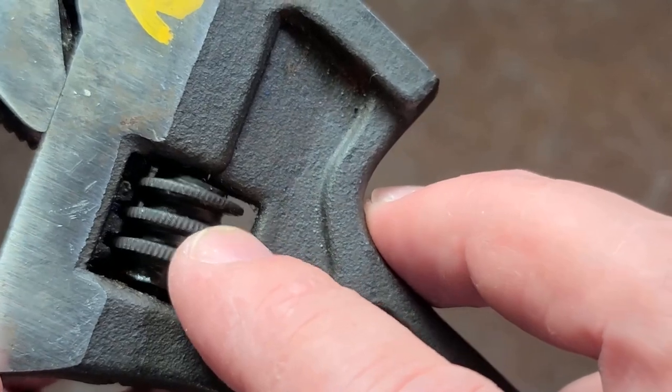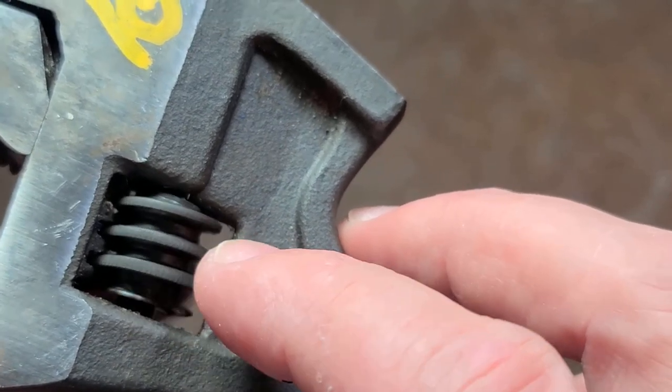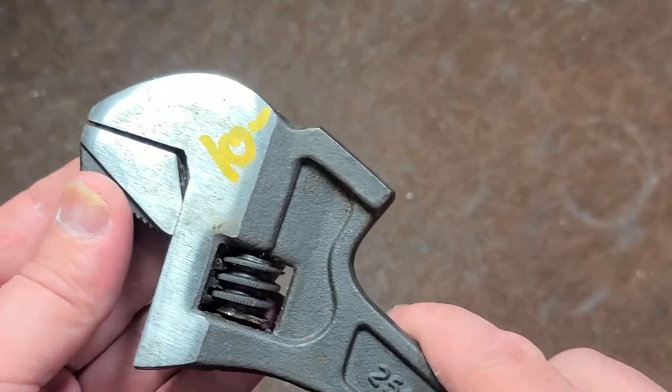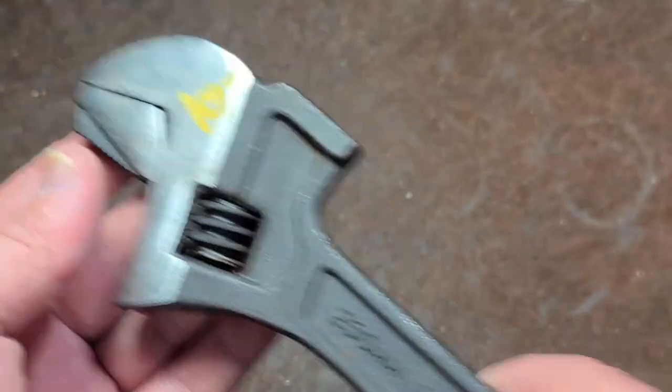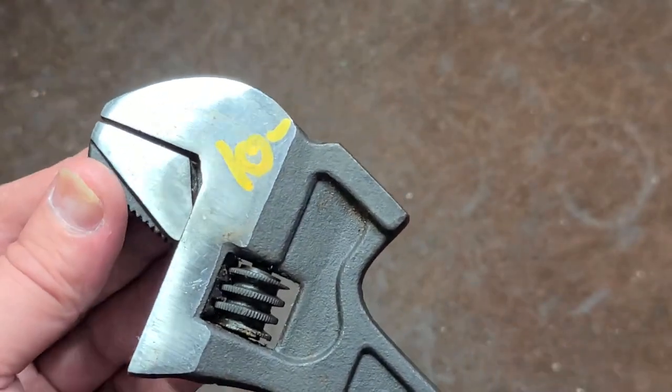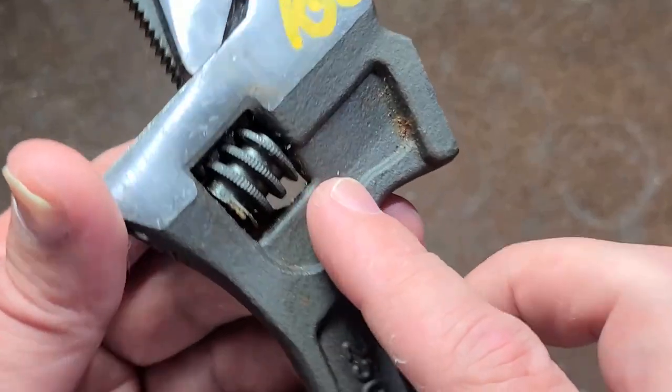Usually, these thumb screws actually have a spring in them just to prevent them from wanting to rock back and forth as much when you're putting them on a fastener, turning, pulling them off again to prevent the jaw from wandering around. Of course, they didn't do that.